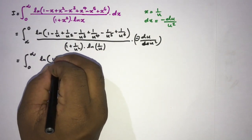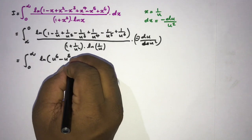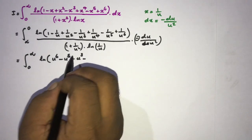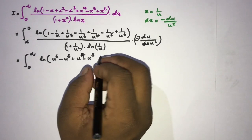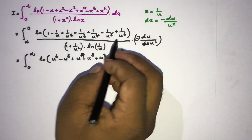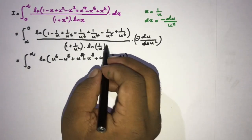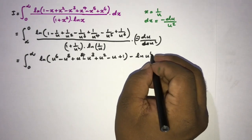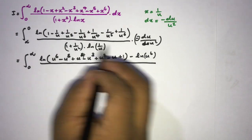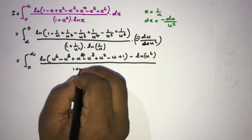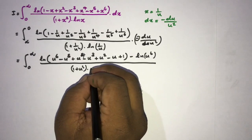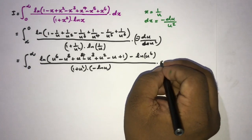We write natural log of u⁶ − u⁵ + u⁴ − u³ + u² − u + 1, minus natural log of u to the sixth power, in the denominator. Since we have u squared plus 1 over u squared, the u squared terms cancel, leaving 1 plus u squared. Natural log of 1/u equals minus natural log of u, so we get minus natural log of u, times du.